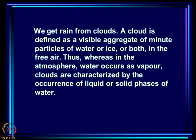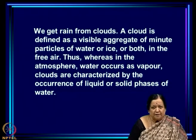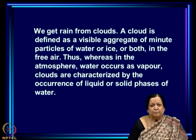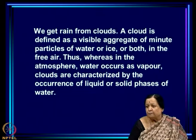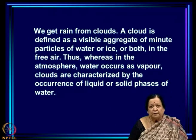We all know that we get rain from clouds. What is a cloud? A cloud is defined as a visible aggregate of minute particles of water or ice or both in free air. Thus, whereas in the atmosphere water occurs as vapor, clouds are characterized by the occurrence of liquid or solid phases of water.